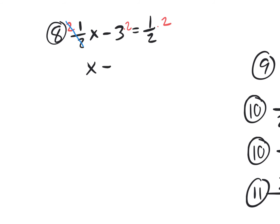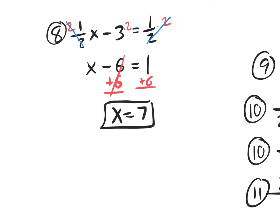So I have x, and then minus 3 times 2 is 6. Over here the 2 and the 2 also eliminate, and I have equals 1. So instead of adding 3 to both sides and ending up with 3 and a half, I just decided to get rid of the fraction right from the start. Adding 6 to both sides gives me x equals 7. That's my answer to number 8.